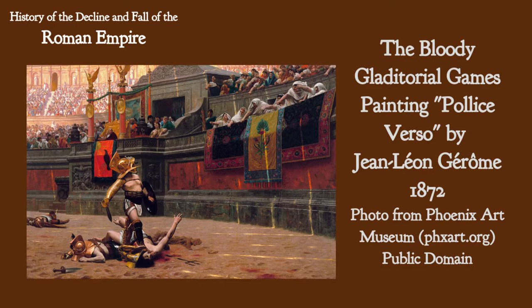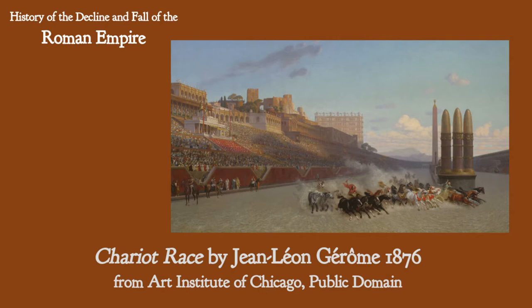One area in which Rome truly was decadent compared to us was gladiatorial games, which persisted into the Christian empire. It wasn't just punishing people like throwing Christians to the lions — they just enjoyed seeing people hacking each other to death in the arena. Christianity softened this stuff somewhat, but even so they would sometimes punish heretics in the arena. The most popular thing in Rome though was chariot races — very popular, but very dangerous. A lot of people got killed during these races.